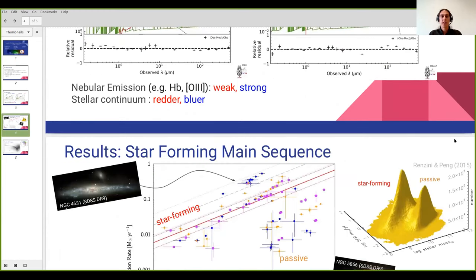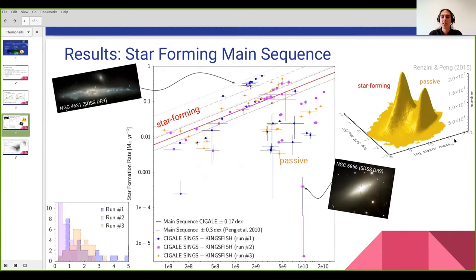As a second step, we wanted to find out how well CIGALE is at predicting galaxy properties. For that, we put them on a star formation versus stellar mass plot, where you also would normally find the main sequence of star forming galaxies. As a reference on the right hand side, I put the famous Renzini and Peng 2015 representation of this bimodality.